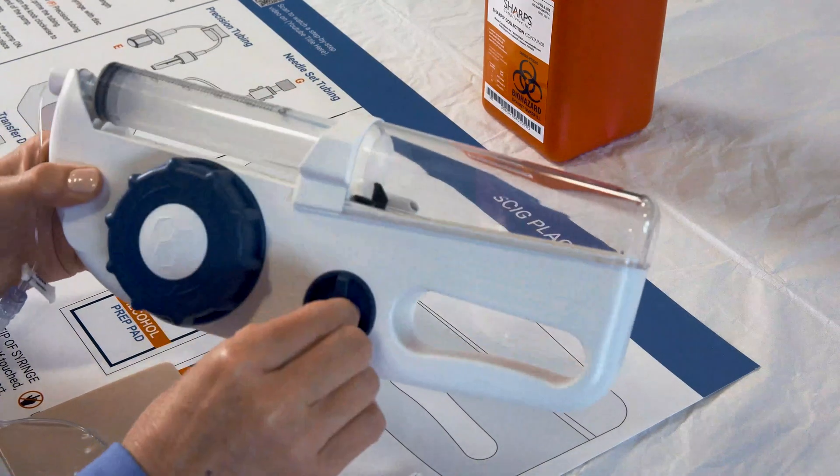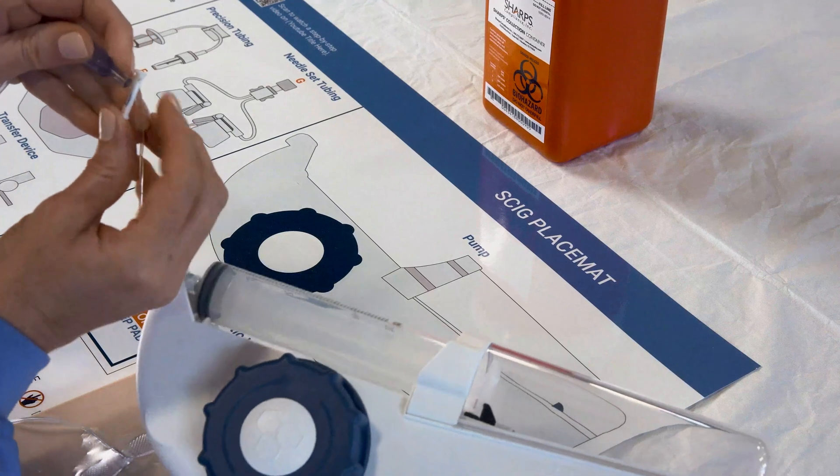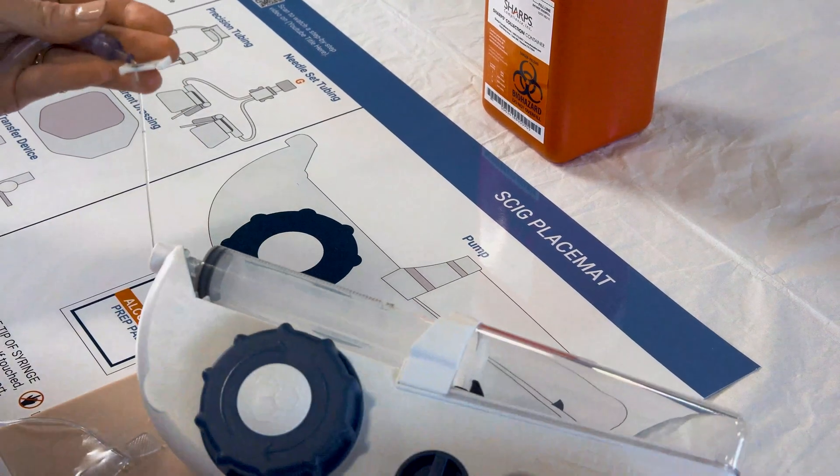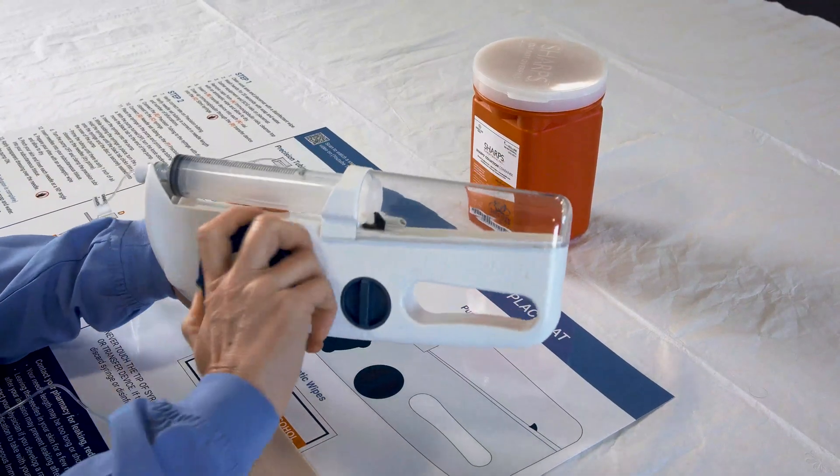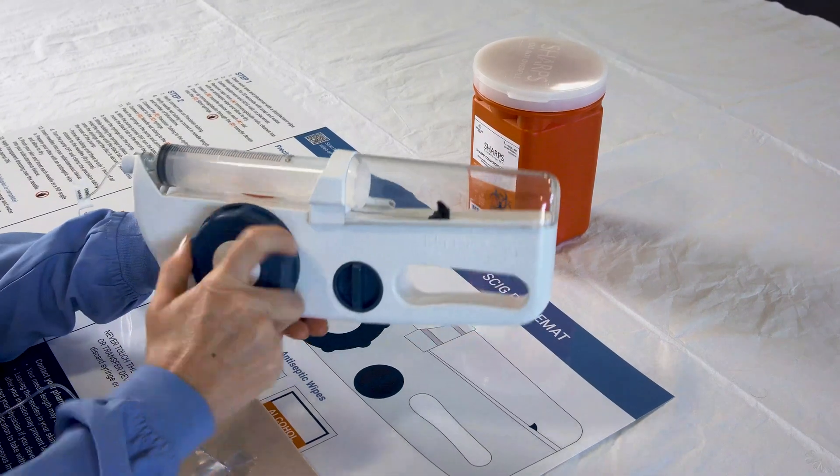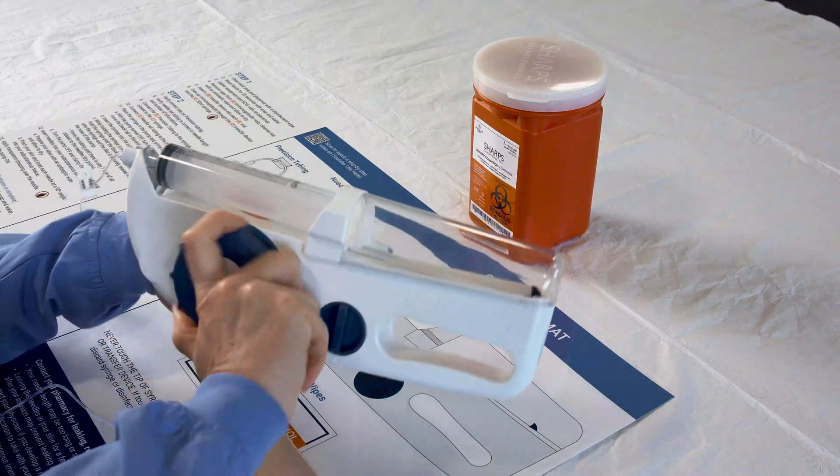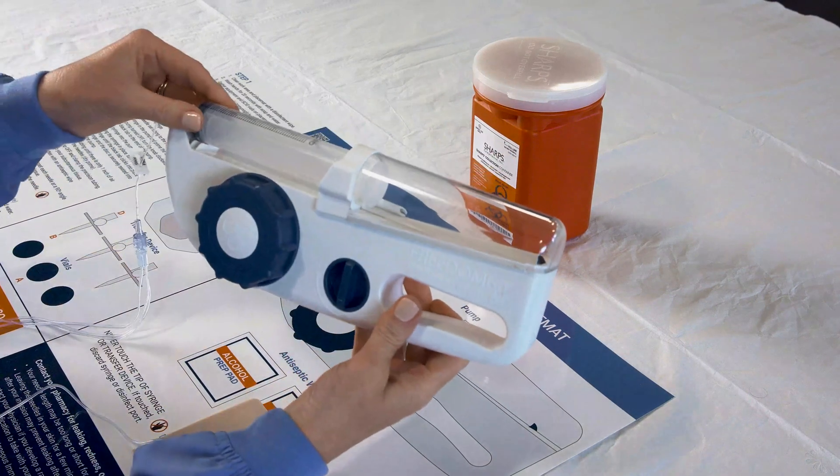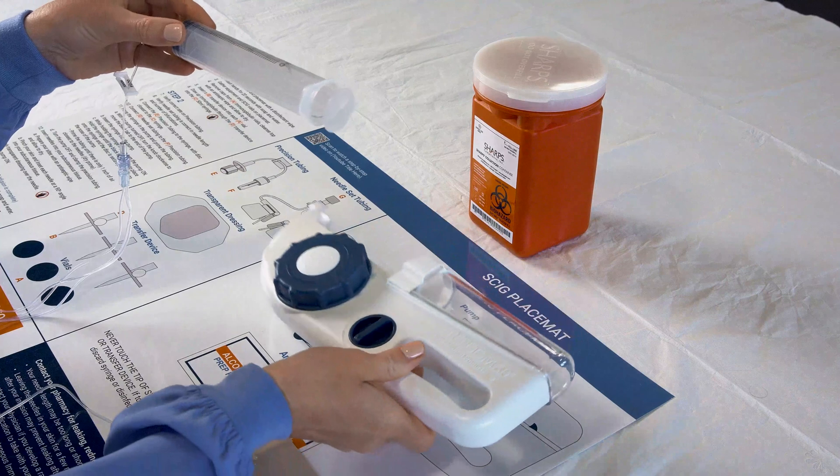Turn the pump off and clamp the tubing like this. To remove the syringe from the pump, you will need to turn the knob clockwise to move the black tab to the end of the pump. Push the syringe into the pump like this, then lift it out of the pump.